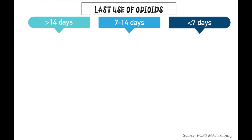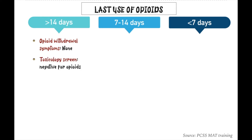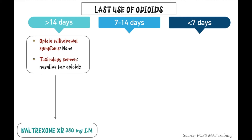If your patient has not used opioids for more than 14 days, you first take a history and look for any opioid withdrawal symptoms — they should not be present. Second, you do a toxicology screen, primarily looking for a negative result for opioids, because we don't want to put patients into active withdrawal. If both are negative, you can go ahead and give Naltrexone XR 380 mg injection, then follow up every 28 days on a monthly basis.